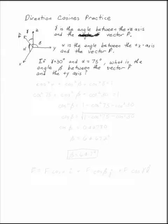Gamma is the angle between the positive z-axis and the vector f. Alpha is the angle between the x-axis and the vector f. Beta would be the third of the direction cosines.